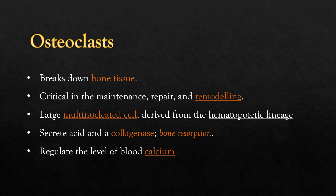An osteoclast is a type of bone cell that breaks down bone tissue. This function is crucial in the maintenance, repair, and remodeling of bone. It is a large multinucleated cell derived from the hematopoietic lineage. The osteoclast digests the composite of hydrated protein and minerals by secreting acid and collagenase, a process known as bone resorption. This process also helps to regulate the level of blood calcium.